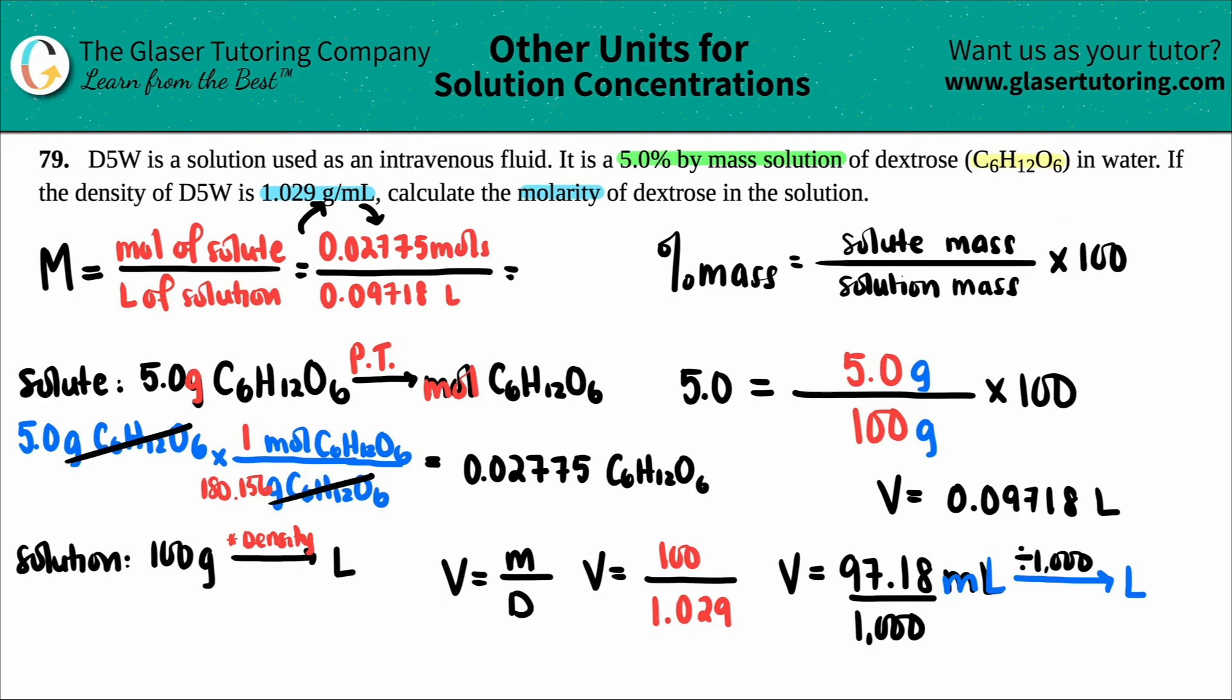And finally, I can now find the molarity because I have the moles of the solute and the liters of the solution. So 0.02775 divided by 0.09718. And I'm looking back at the question. I see that I have two sig figs here. So for sig fig purposes, you should only have two sig figs. But I don't care, but your teacher or professor may. So I'm just going to leave them with the sig figs. So 0.29. And that's molarity. And there you go. That's the molarity of this D5W. 0.29.